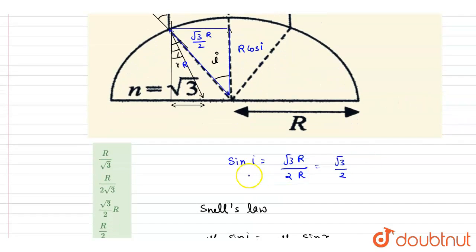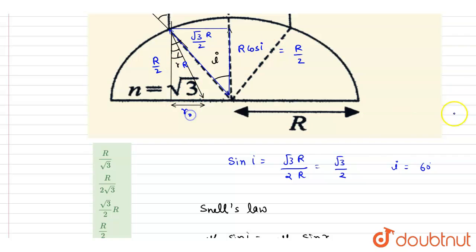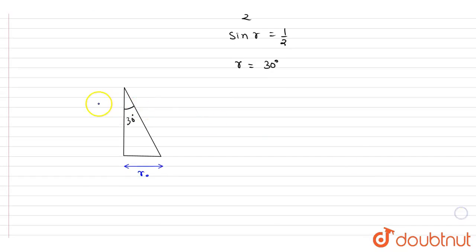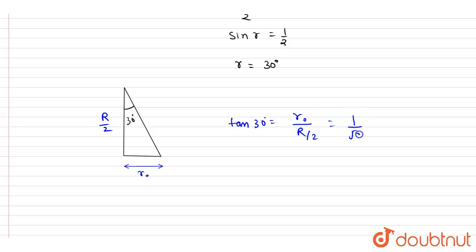Since i = 60°, cos i = 1/2, so the perpendicular distance along the axis is r cos i = r/2. Now using tan 30° = r_naught / (r/2), and tan 30° = 1/√3, we get r_naught = r/(2√3).